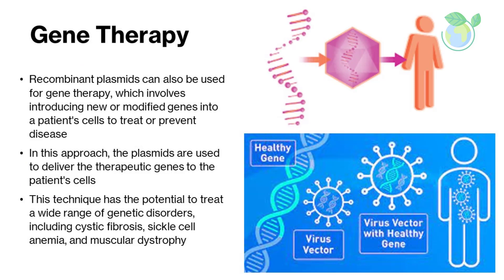Recombinant plasmids can also be used for gene therapy, which involves introducing new or modified genes into a patient's cells to treat or prevent disease. In this approach, the plasmids are used to deliver the therapeutic genes to the patient's cells. This technique has the potential to treat a wide range of genetic disorders, including cystic fibrosis, sickle cell anemia, and muscular dystrophy.